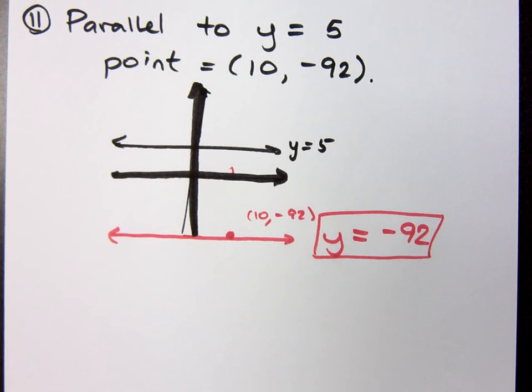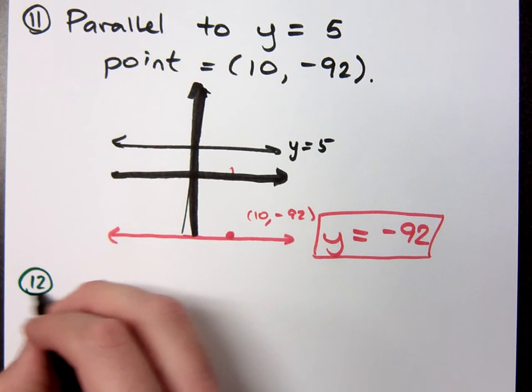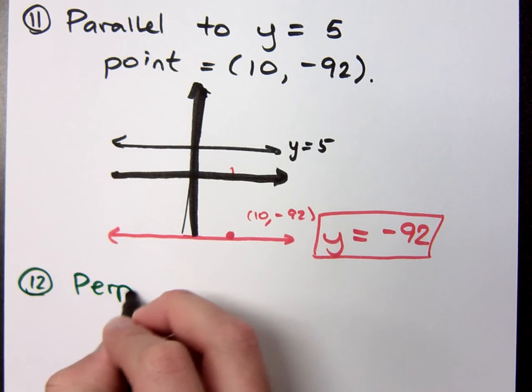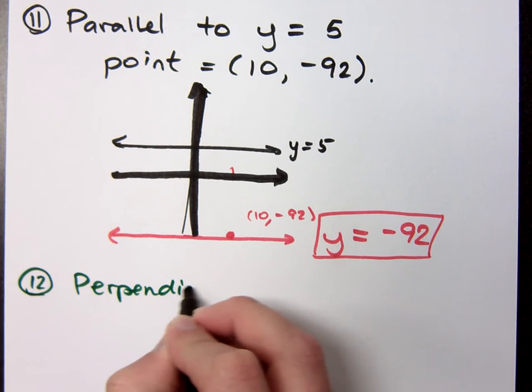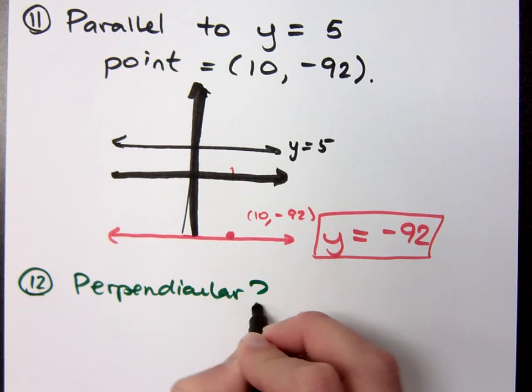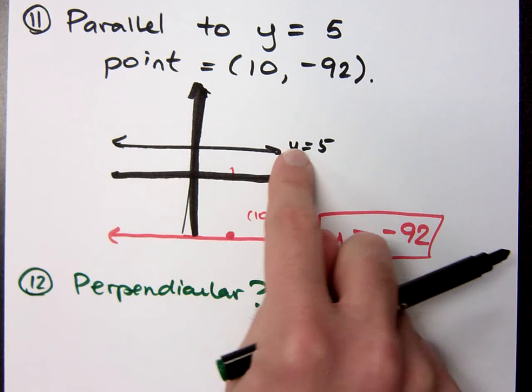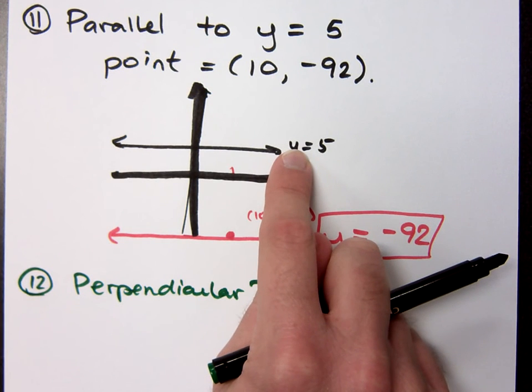Right. Now, if I change this up a little bit and I said, you know what? What if I wanted to be perpendicular? If I want to be perpendicular to y equals 5, how are you perpendicular to a horizontal line?